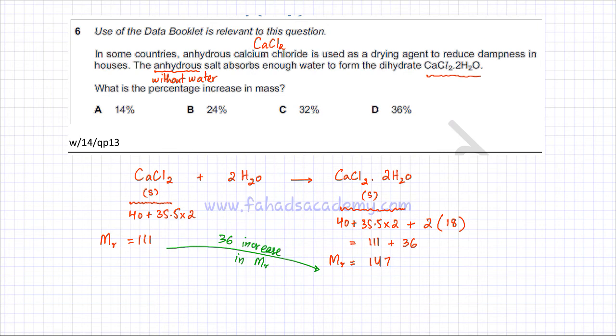So the question is asking for us to tell us the percentage increase. So originally it's 111, and it increases by 36, so the percentage increase would be equal to - the increase is 36, the original mass is 111, and you need to multiply it by 100 as well to find the percentage, so multiply this by 100.